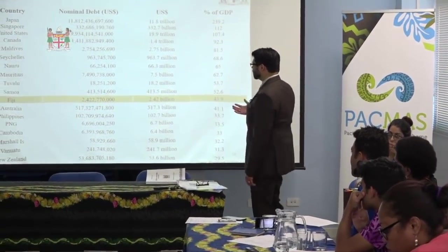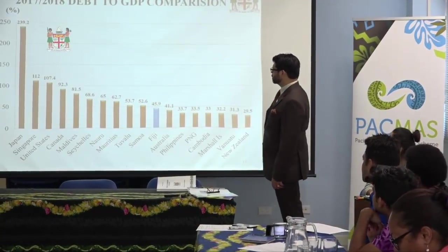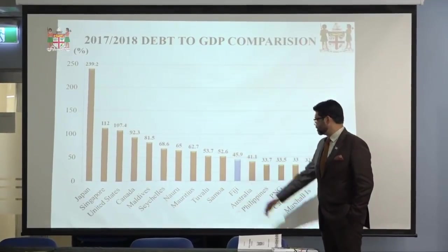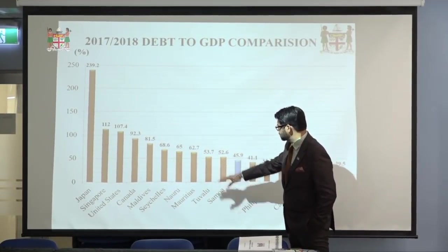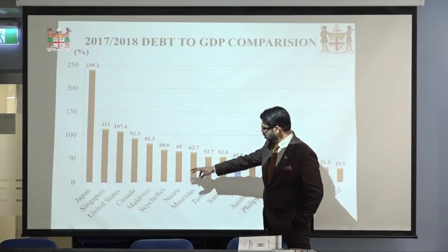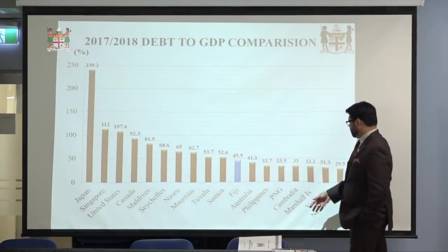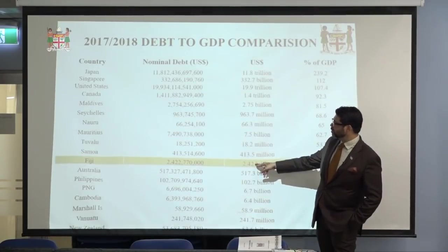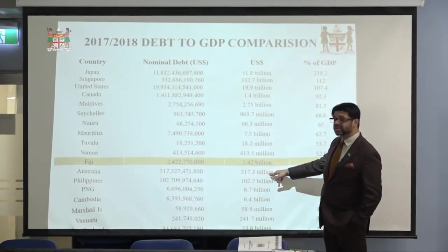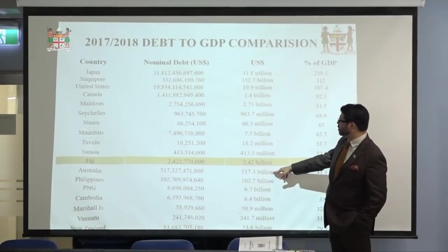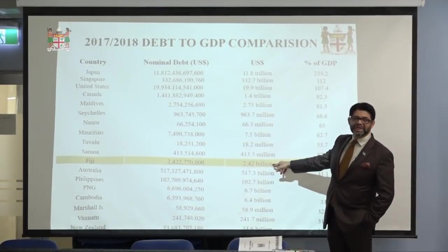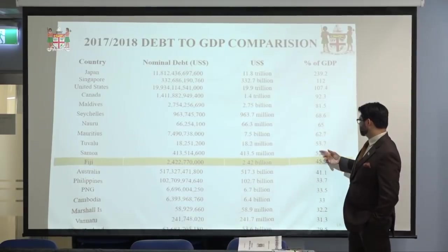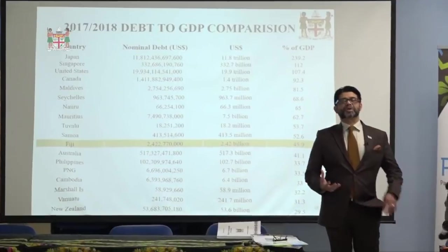Let's do some comparisons in US dollars. As a percentage of GDP, that's where we sit. Samoa, Tuvalu, Mauritius, Nauru, Maldives — looking at these countries. Australia's debt to GDP ratio is actually less than ours at 41.1%, but the dollar value of Australia's debt is $517.3 billion US dollars. The dollar value of our debt is $2.42 billion US. Our percentage of GDP is slightly higher but the dollar value is far less because the Australian economy is far bigger.